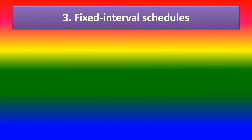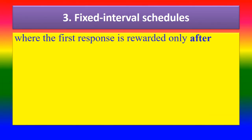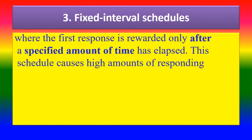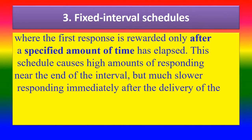Third, Fixed Interval Schedules, where the first response is rewarded only after a specified amount of time has elapsed. This schedule causes a high amount of responding near the end of the interval, but much slower responding immediately after the delivery of the reinforcer.